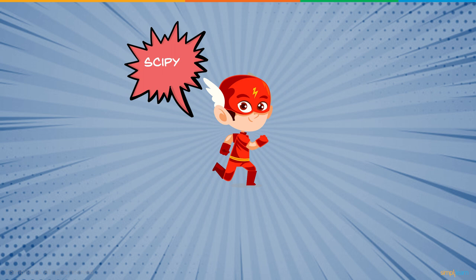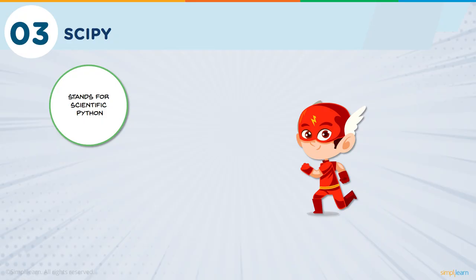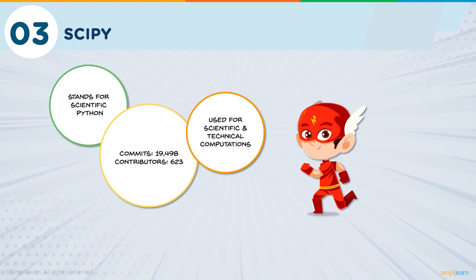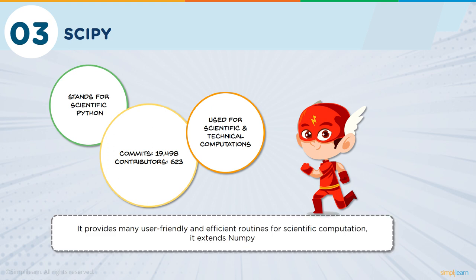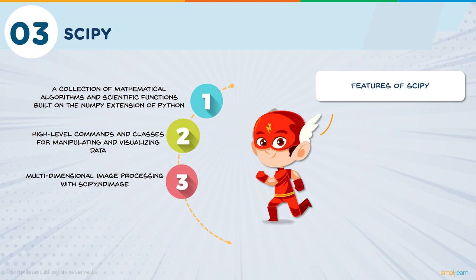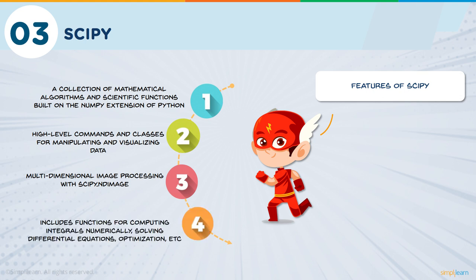Now let's discuss the next library, SciPy — another free and open-source Python library extensively used in data science for high-level computations. SciPy stands for Scientific Python and has around 19,000 commits on GitHub with an active community of 600 contributors. It is extensively used for scientific and technical computations, and as it extends NumPy, it provides many user-friendly and efficient routines for scientific calculations. SciPy has a collection of algorithms and functions built on the NumPy extension of Python, various high-level commands for data manipulation and visualization, the ndimage function for multi-dimensional image processing, and built-in functions for solving differential equations, linear algebra, and more.